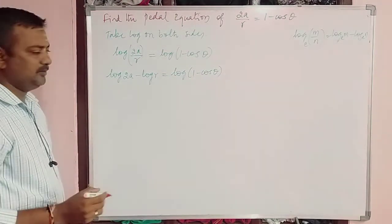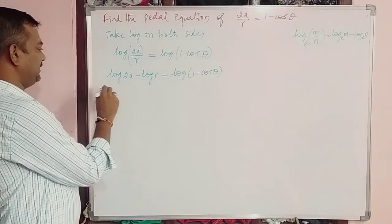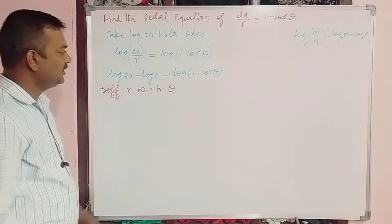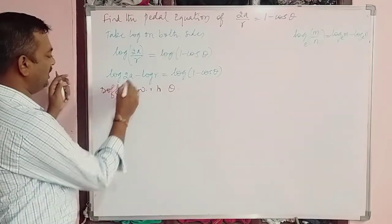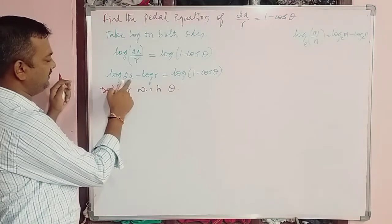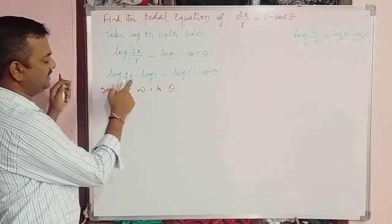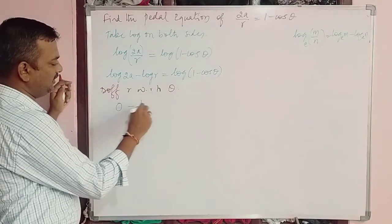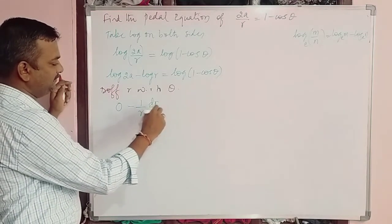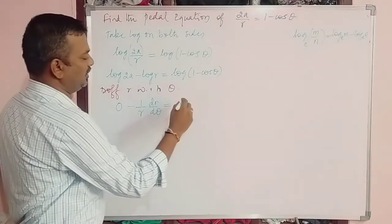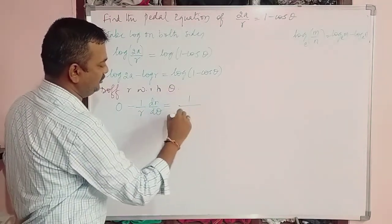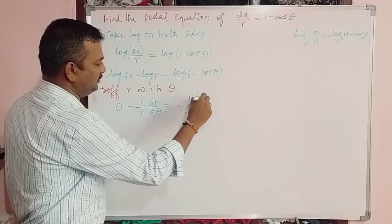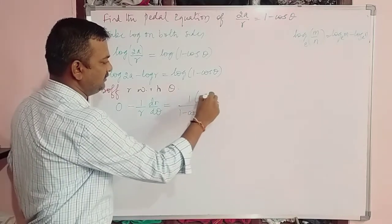Now differentiate with respect to θ. Since 2a is a constant, log(2a) differentiates to 0. So −(1/r)·dr/dθ = 1/(1 − cos θ) multiplied by the derivative of (1 − cos θ), which gives minus sin θ.